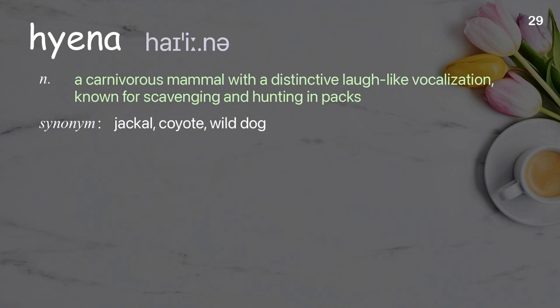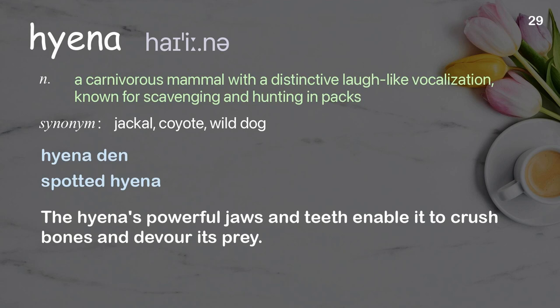Hyena: a carnivorous mammal with a distinctive laugh-like vocalization, known for scavenging and hunting in packs. Examples: hyena den, spotted hyena. The hyena's powerful jaws and teeth enable it to crush bones and devour its prey.